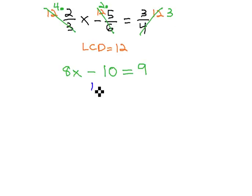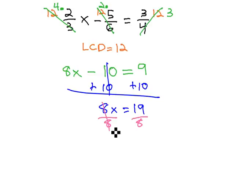This reduces the problem to a two-step equation, which we can solve by adding 10. 8x equals 19, and finally dividing by 8 to get x equals 19/8.